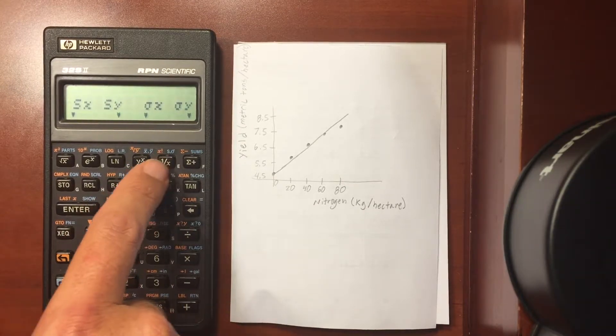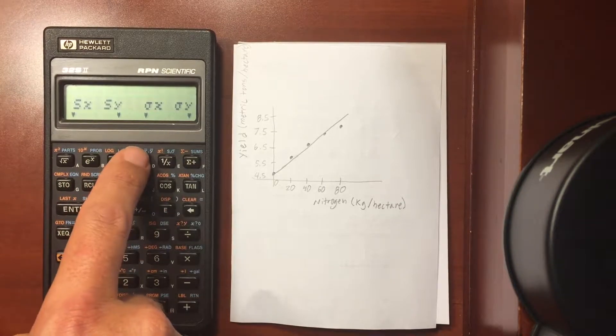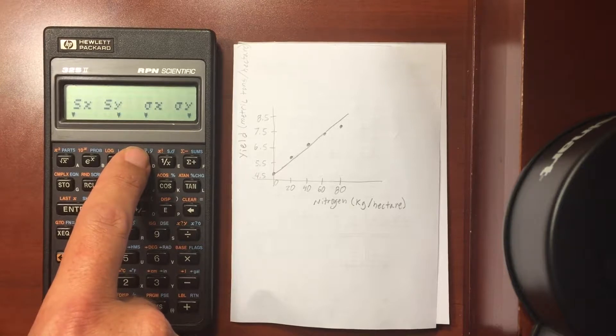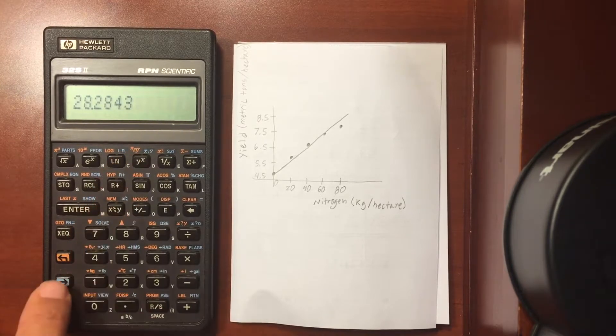You can look at the standard deviations. So these are your sample standard deviations and your population standard deviations. And you can get your x or your y value. So you can have two different data sets and find the standard deviation of both of those.